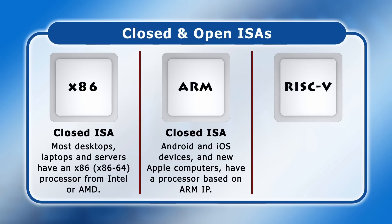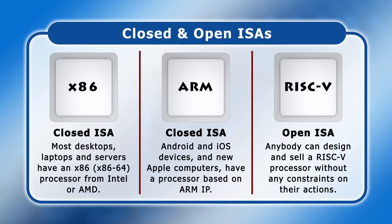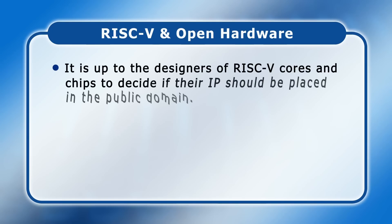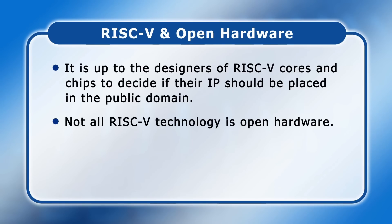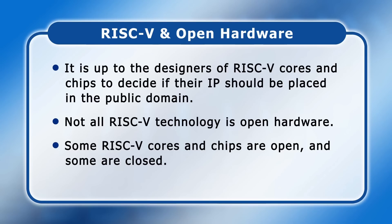Many different companies design and manufacture ARM processors, but because the ARM ISA is closed, they all have to pay license fees to ARM Ltd. In contrast, the RISC-V ISA is free and open. This means that anybody can design and sell a RISC-V processor without any constraints on their actions. Clearly, RISC-V chips themselves can never be free, as they are costly to manufacture in a fabrication plant. But the ISA on which any RISC-V processor is based is not owned or controlled by any organisation. Whilst the RISC-V ISA is free and open, it's up to the designers of RISC-V cores and chips to decide whether the intellectual property they have created will be placed in the public domain, meaning not all RISC-V technology is open hardware.